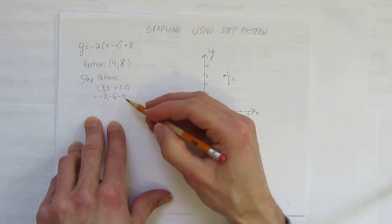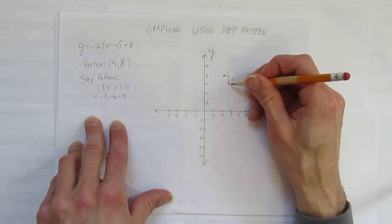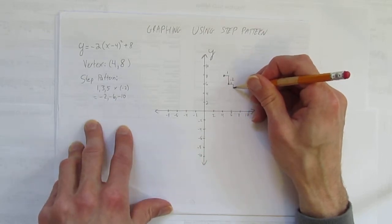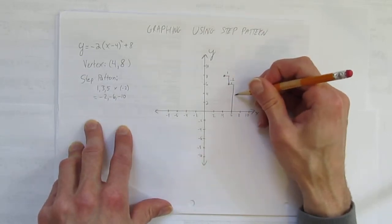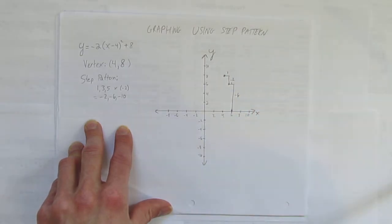Now I'm going to count again the step pattern. Go over 1, always over 1. That takes us over here. But this time go down negative 6. That's from the step pattern. And show your work that you've counted down there.